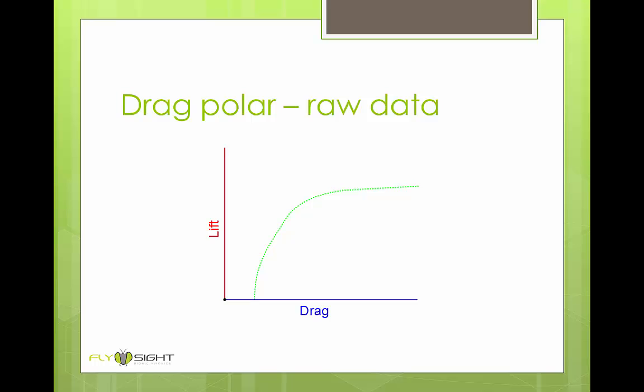This is the drag polar. The green line shows lift and drag measurements that we've made as we've tilted the wing from zero angle of attack near the bottom up to the stall point. The drag polar shows us the relationship of lift and drag for this airfoil.